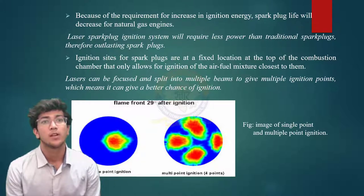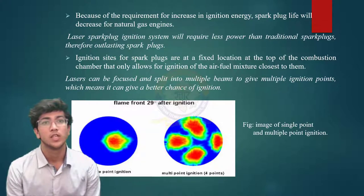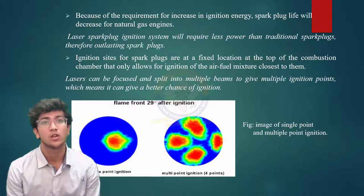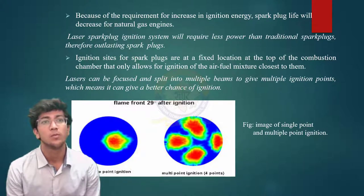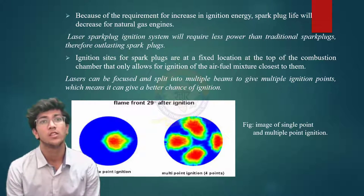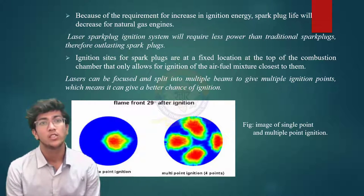Ignition sites for spark plugs are at a fixed location at the top of the combustion chamber, only allowing ignition of the air-fuel mixture closest to them. Lasers can be focused and split into multiple beams to give multiple ignition points, which means a better chance of ignition. As shown in the figure, multi-point ignition is faster and more beneficial than single-point ignition.